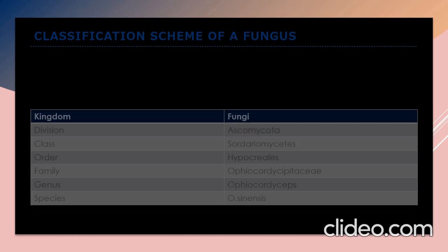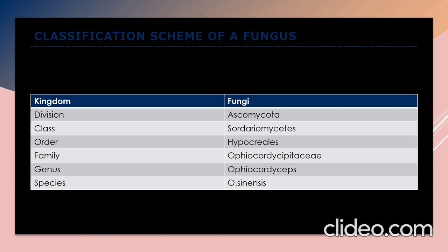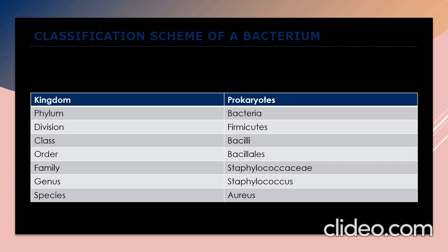A small activity: the classification scheme of a fungus and a bacterium. Here is the classification scheme, and the next one is the classification scheme of a bacterium. The bacterium's classification goes: kingdom Prokaryota, phylum Bacteria, class, order, family, genus, and species.